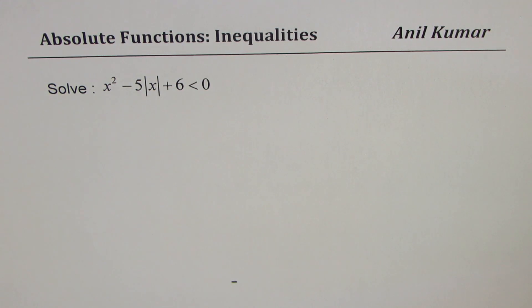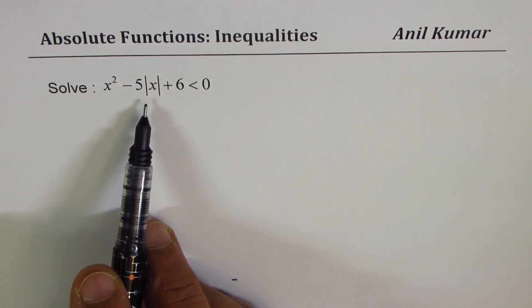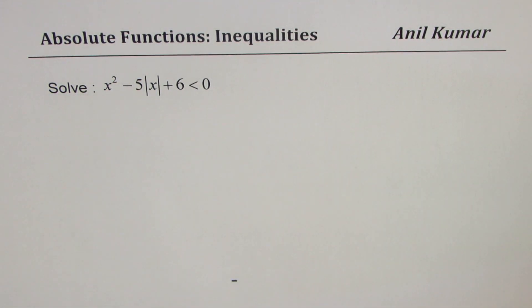The question here is x squared minus 5 times the absolute value of x plus 6 is less than zero.